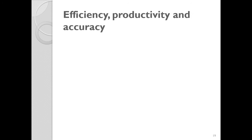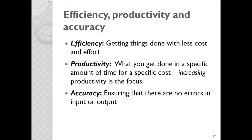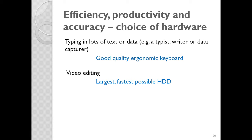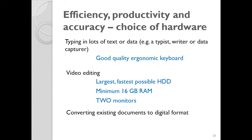ICT provides us with efficiency, accuracy, and productivity, and this also affects the choice of hardware we use. If you're typing a lot of text, get a good quality keyboard. If you're doing video editing, you want the largest, fastest possible hard drive, enough memory, and maybe two monitors. If you are converting documents to digital format, you might need an automatic sheet-feeding scanner. The value of ICT drives us toward the right hardware choices to help us do these things effectively.